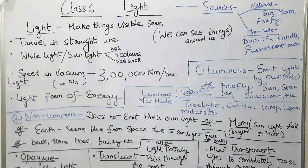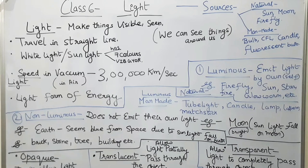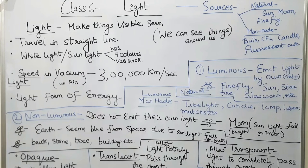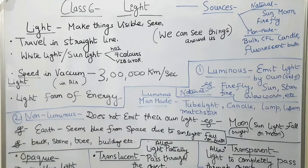Man-made luminous sources include tube light, candle, lamp, lantern, matchstick, and also a gas stove burning. All of these are luminous because they emit their own light.